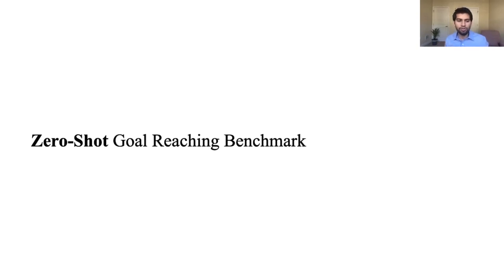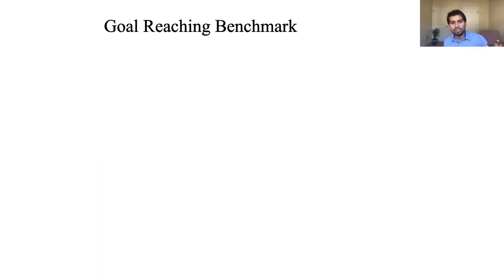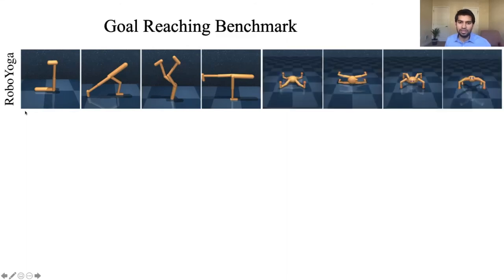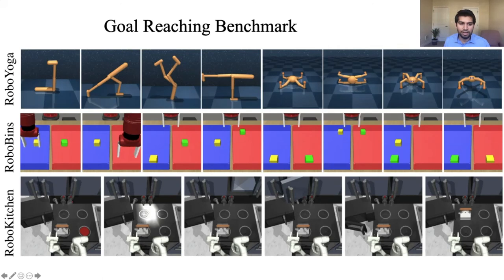Unlike previous methods, we are not bound to testing on one task in one environment. The agent is completely unsupervised and can achieve any goal. At test time, by only training once, we show the robot many goals: can you make these yoga-like shapes with your body? Can you rearrange the block, open the cabinet, turn on the light, put on the burner? We call the shape-making task 'robo yoga.'